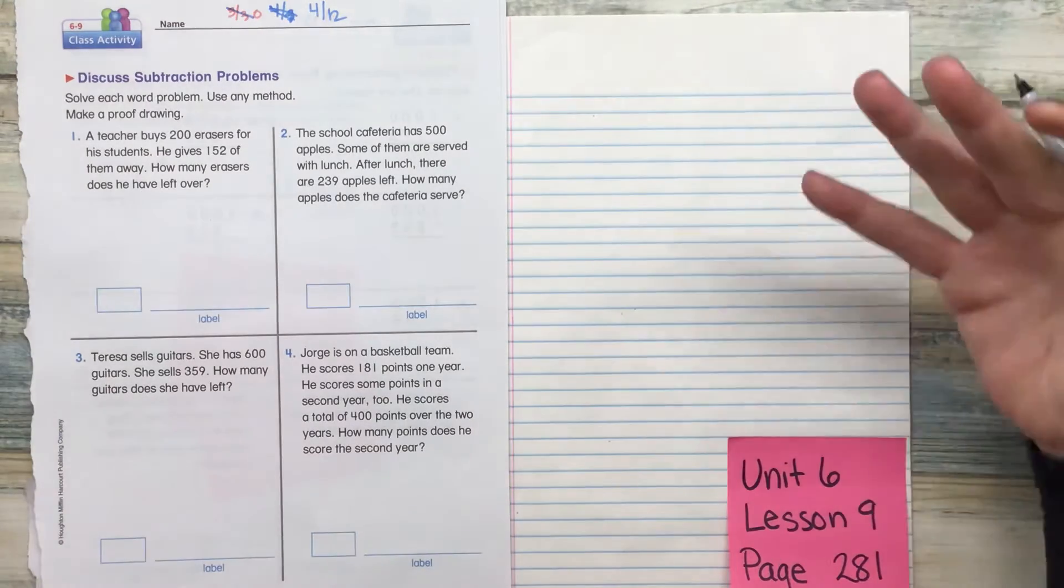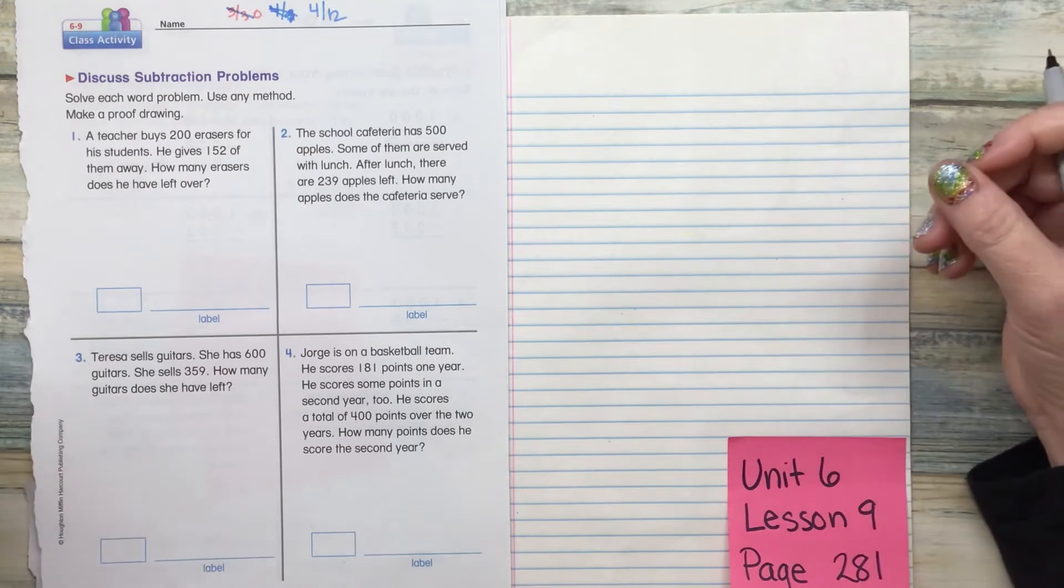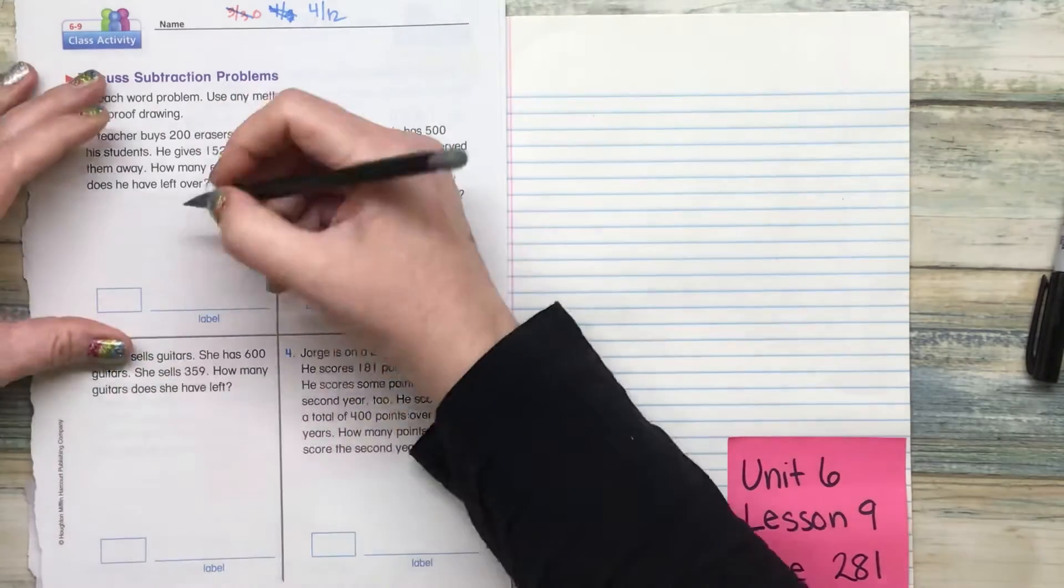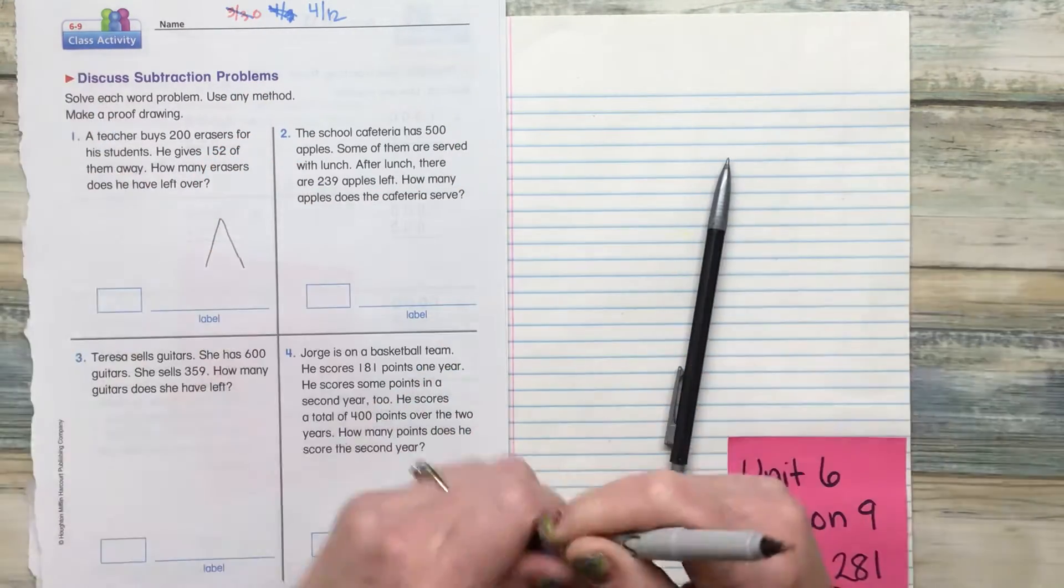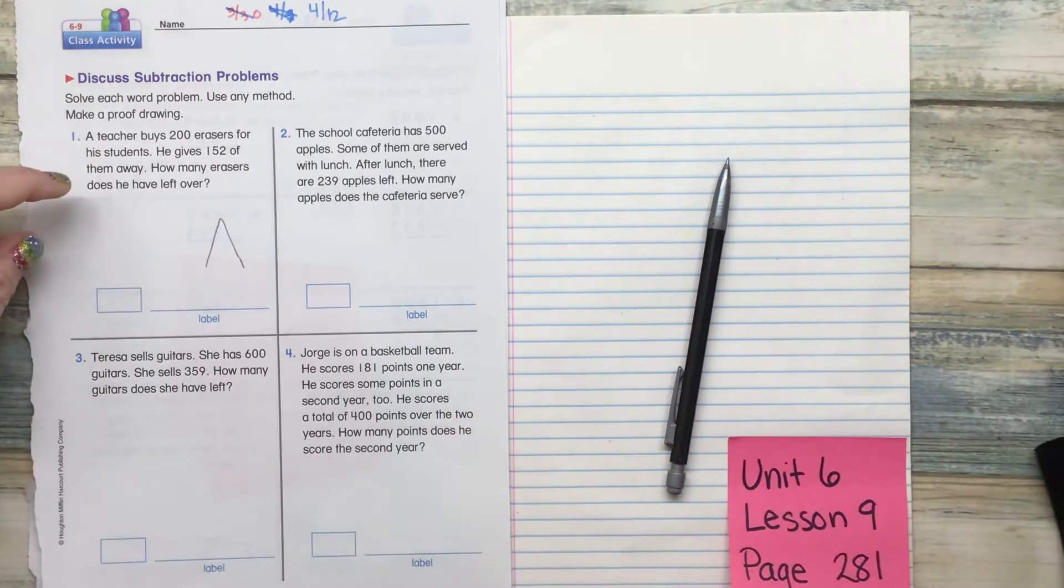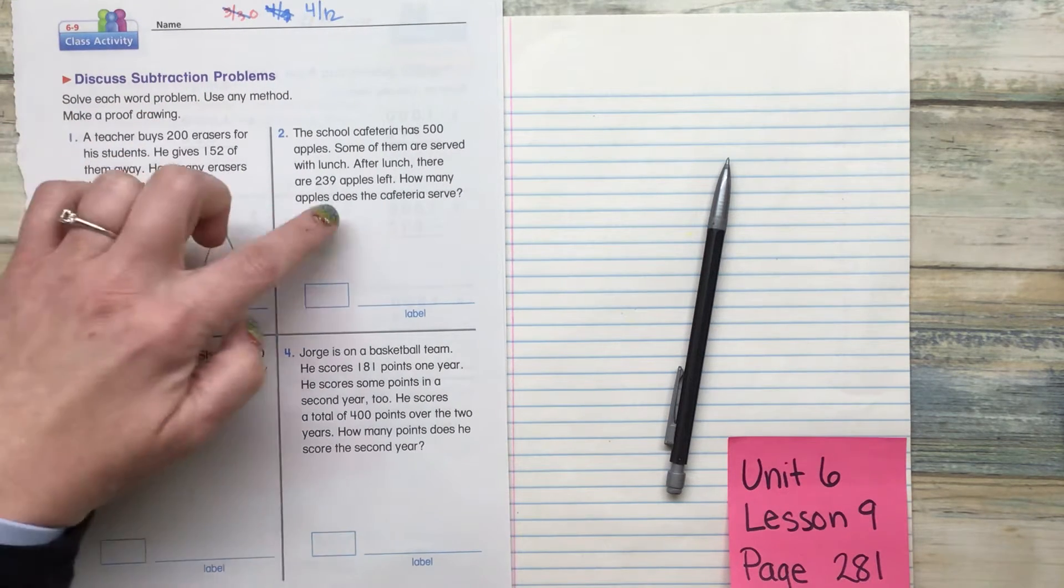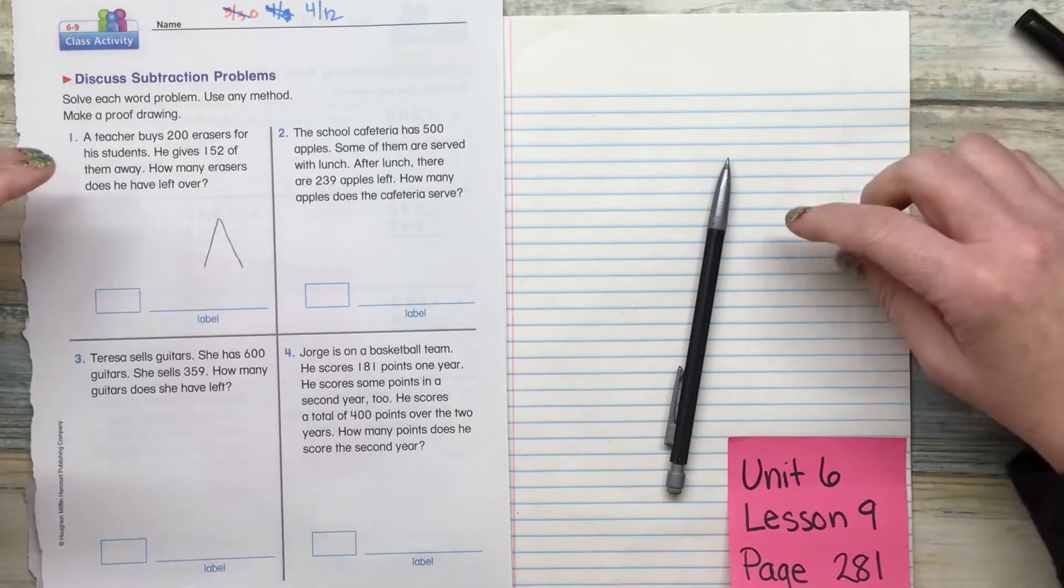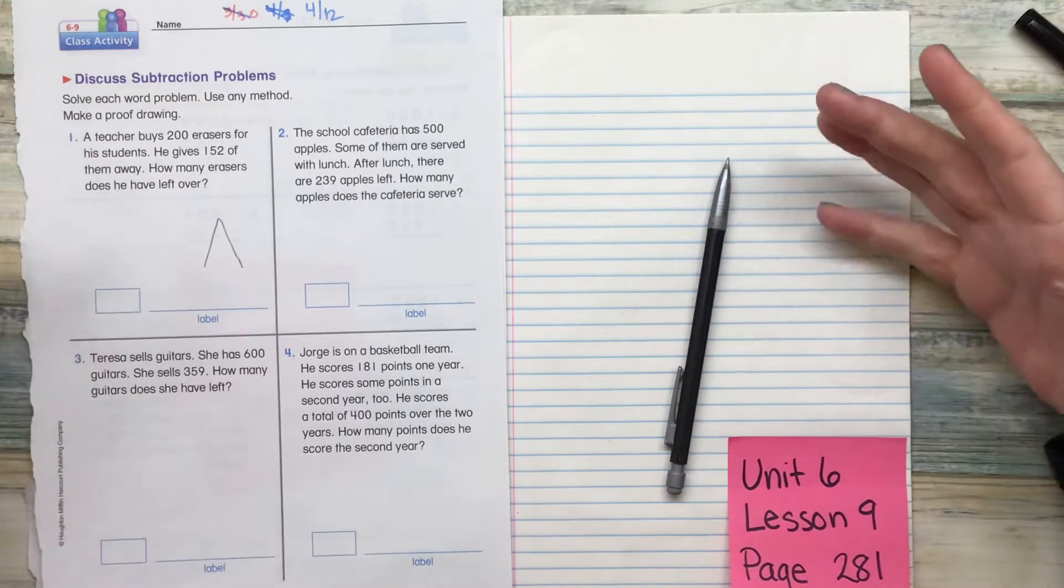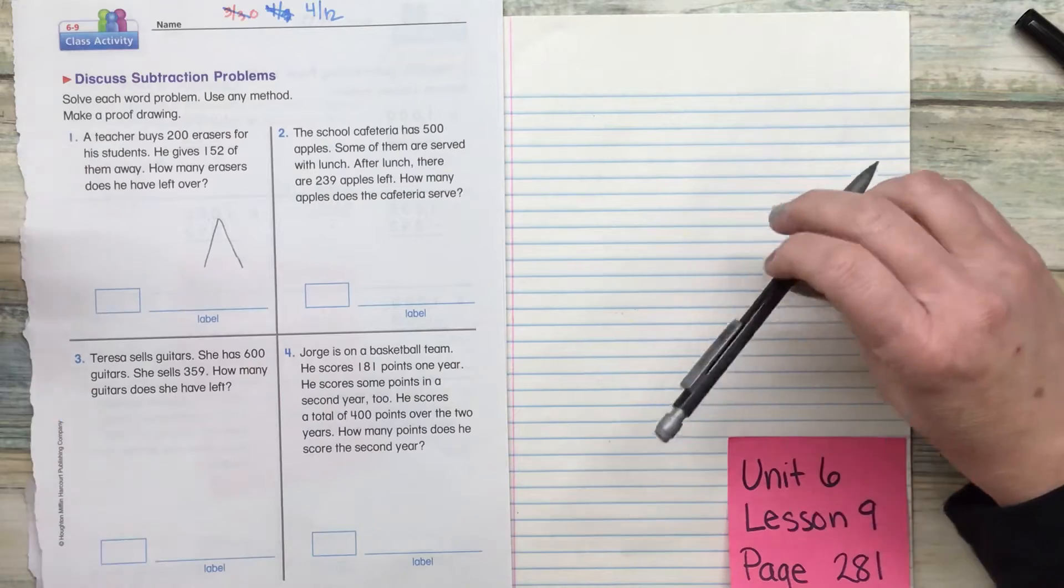So the first thing we're going to do with any story problem is we're going to read it and figure out what needs to happen. I always like to make a math mountain for everything just so I know what's going on with it. The total, because they're telling us these are subtraction problems, the total will be given in each of those. One of the partners will always be missing for each of these because we know it's subtraction. And when we have subtraction, we have a total at the top that we're working with.